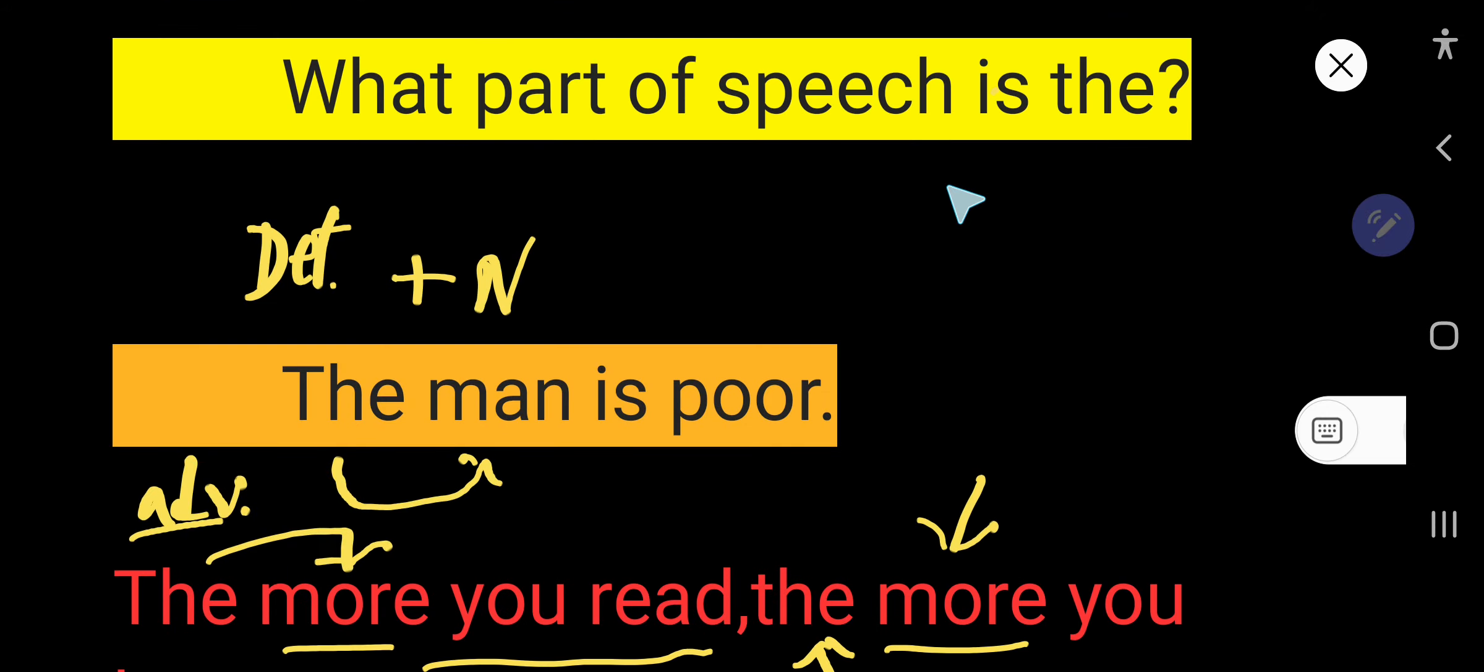So, we are getting two parts of speech for the word the. The first part of speech is adjective, and more specifically, article or determiner. And the second part of speech is adverb.